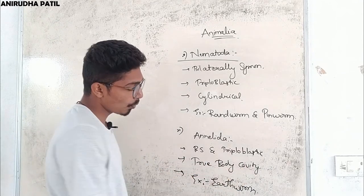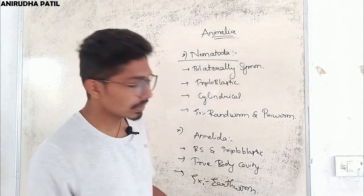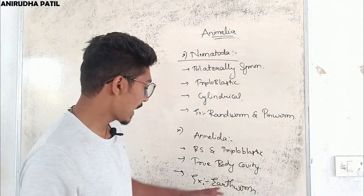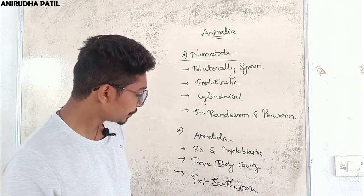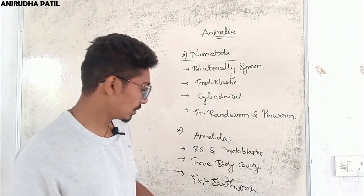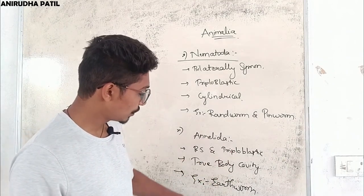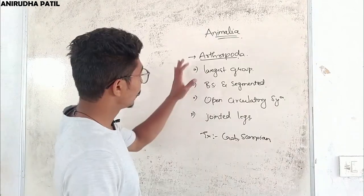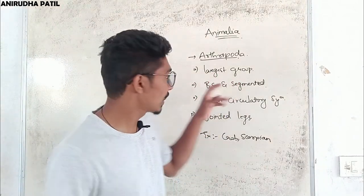Next is Annelida. The body is also bilaterally symmetrical and triploblastic. Here we have a true body cavity, meaning the organs are differentiated and located in specific regions. There is segmentation present. An example is earthworm.